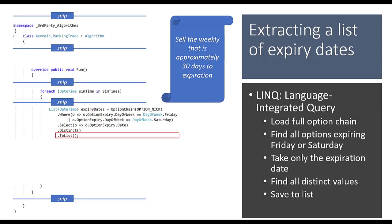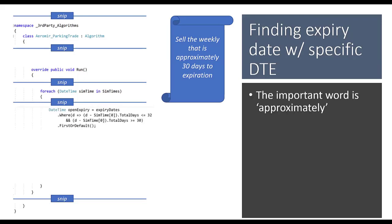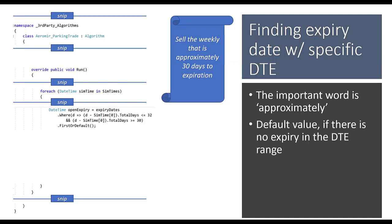To find the expiry closest to 30 days, we calculate the difference in total days between each expiry date and the current simulator timestamp. If the difference is between 30 and 32 days, we pick it — there should be only one. If we can't find one, we use a default value.